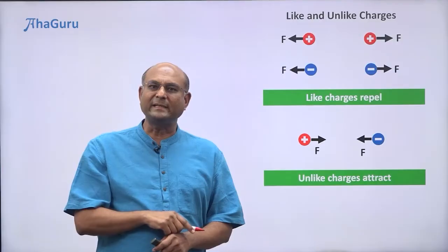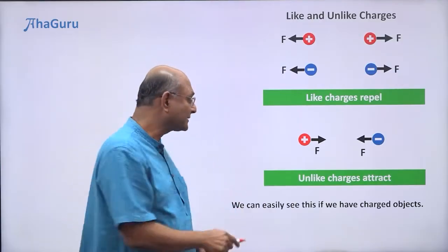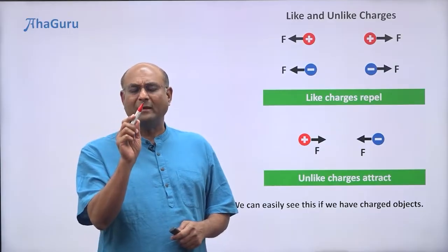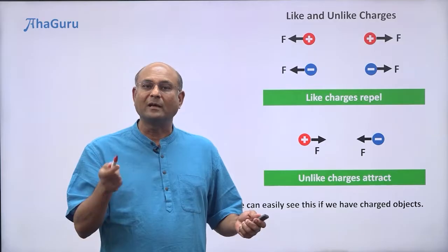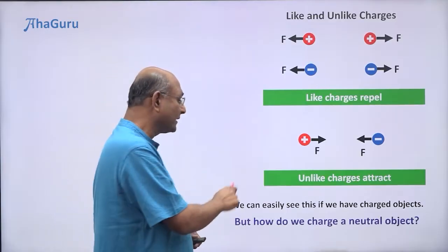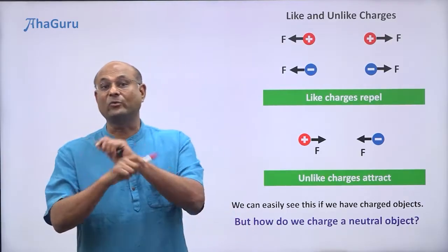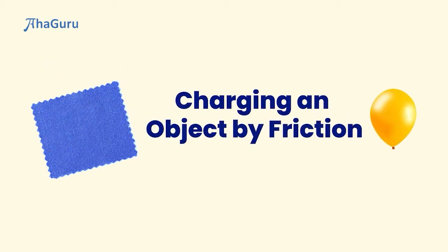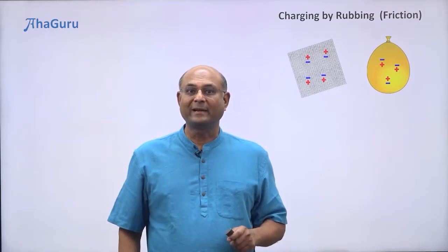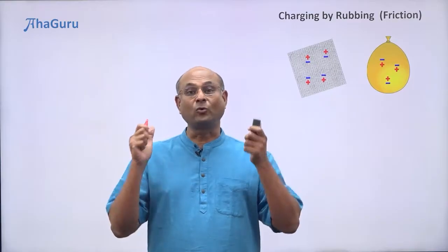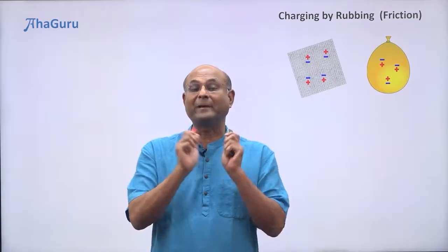We can actually see this very easily if we have some charged objects. But if I look at this pen, this pen is a neutral object. Most things around us are neutral objects. So now comes the question: how do we charge a neutral object? It turns out to be quite easy — all you have to do is take two different objects and rub them really well.